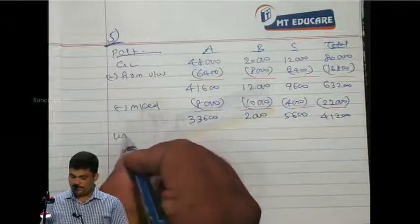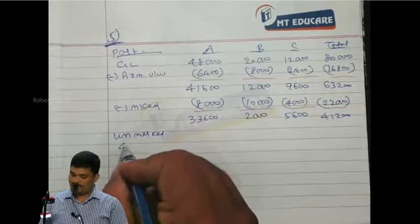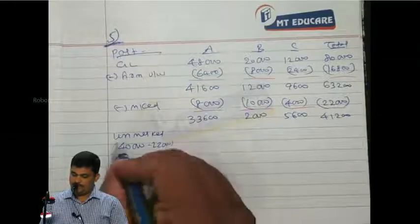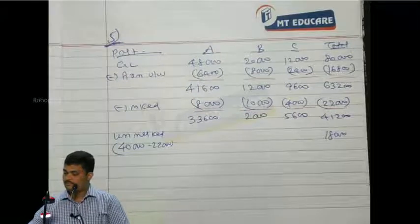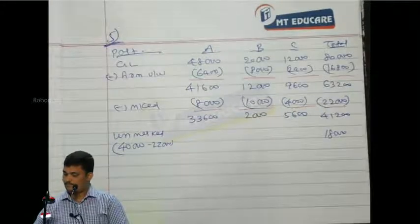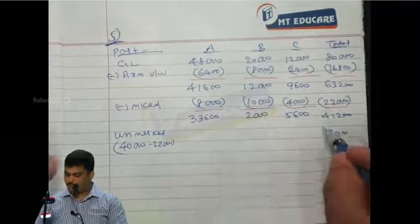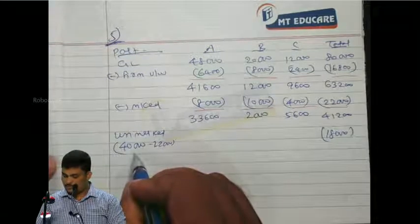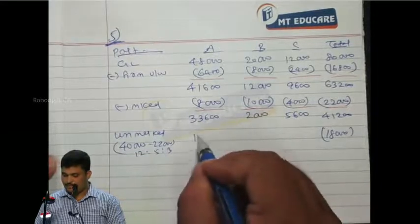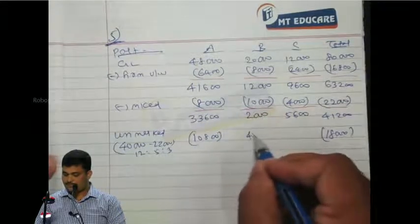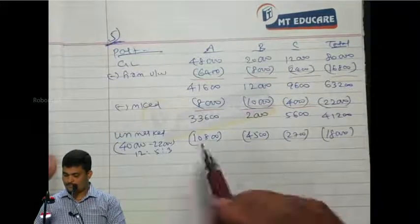Unmarked applications will be total applications 40,000 minus 22,000, so 18,000. Distributing 10,800 in ratio 12:5:3. We get 22,800.